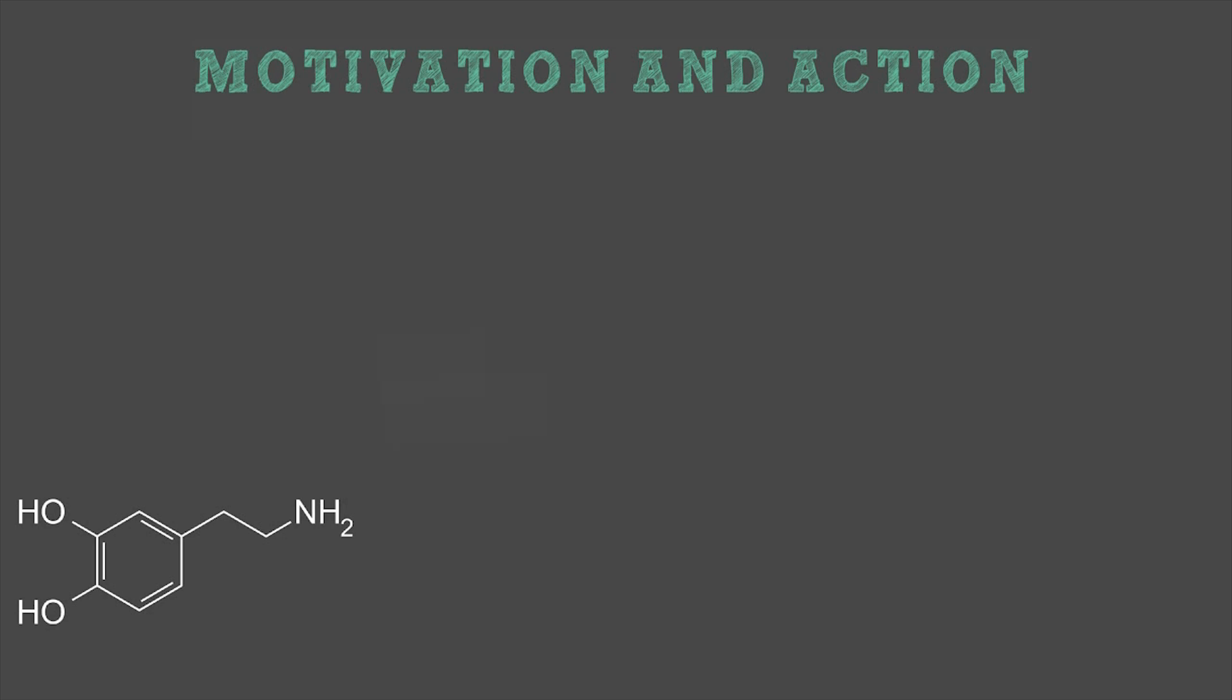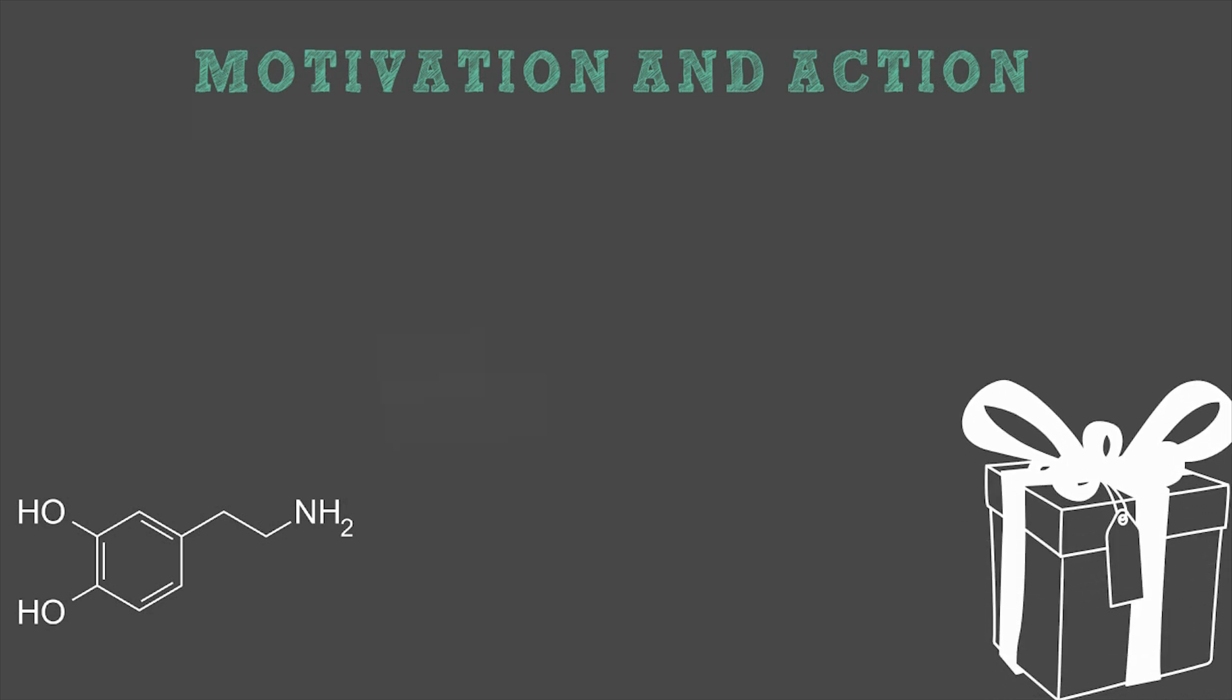From an evolutionary perspective, dopamine is released when we expect some kind of reward. It makes us want to do stuff and reassures us that the thing we did was worth doing. So if your reward system is not working properly, you might have a hard time getting things done. If your brain doesn't expect the reward and fulfillment from something, it won't justify doing it.